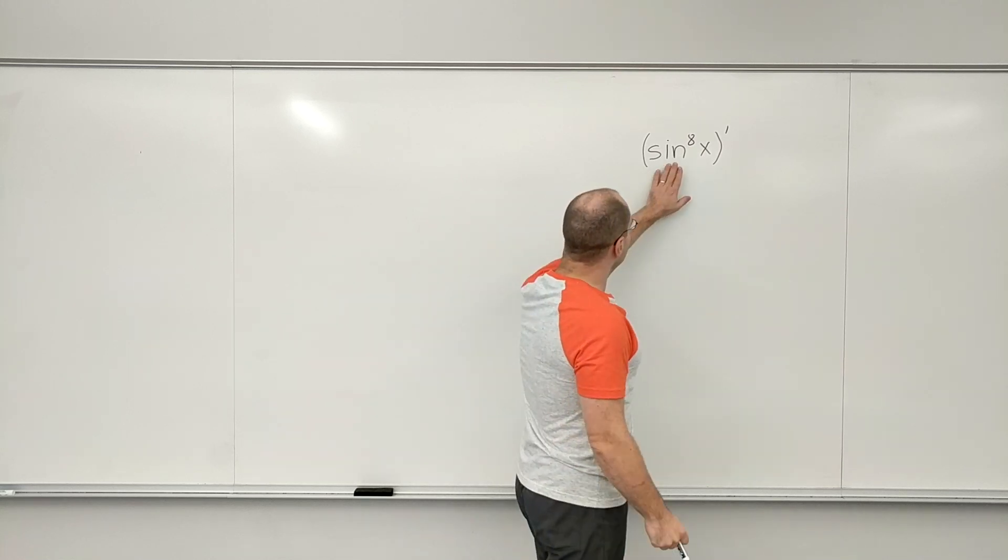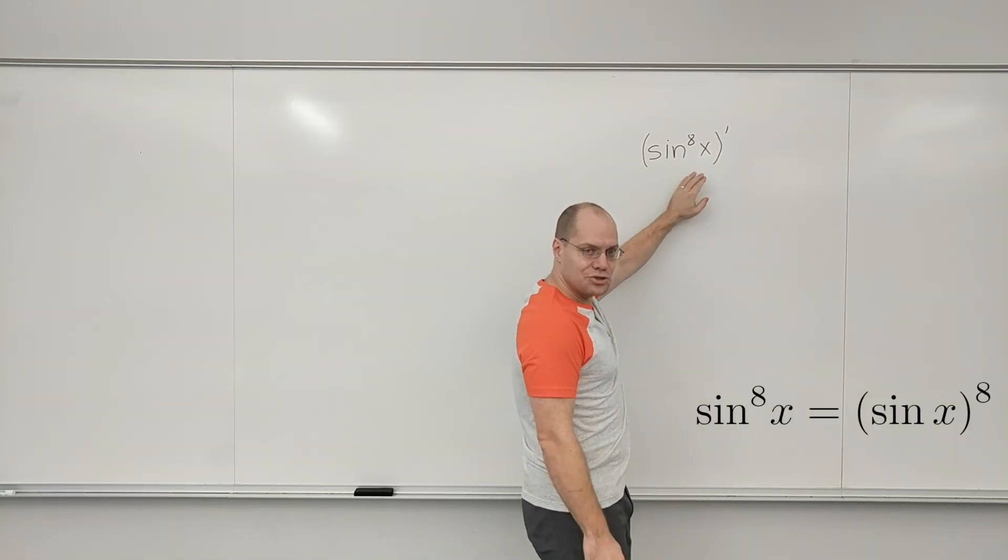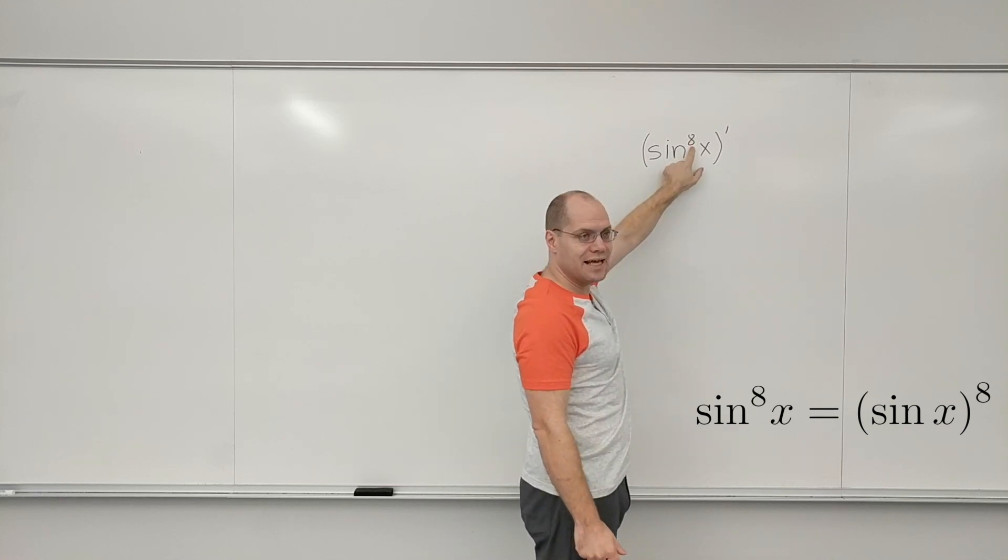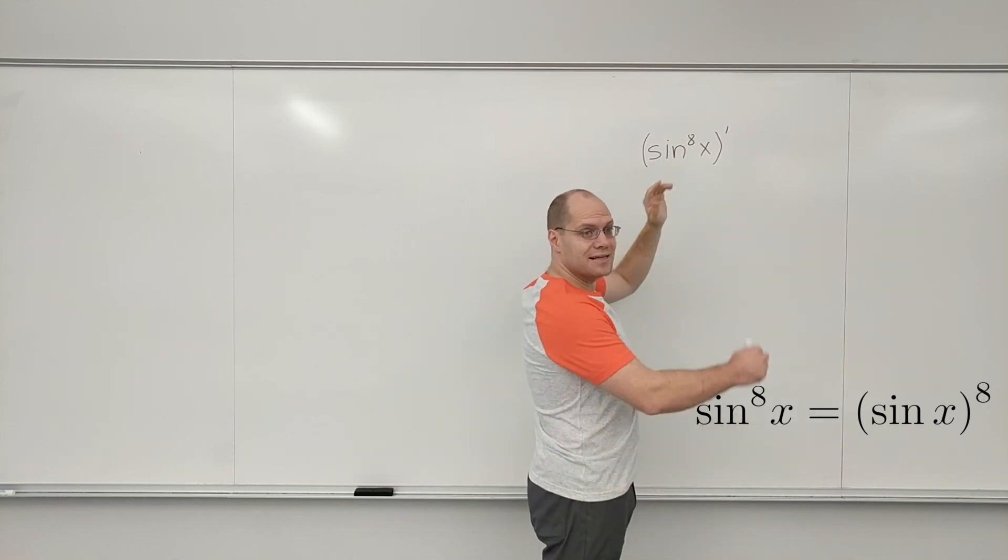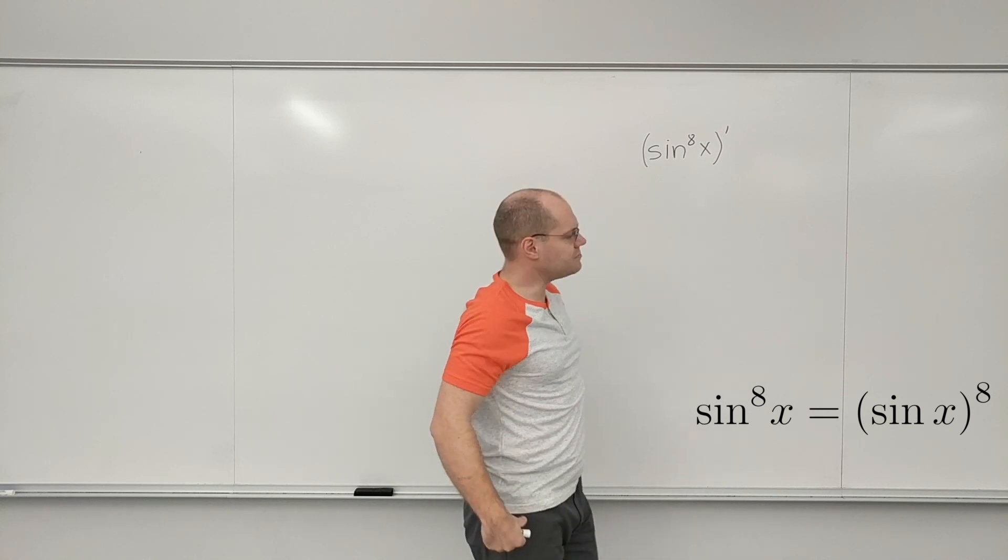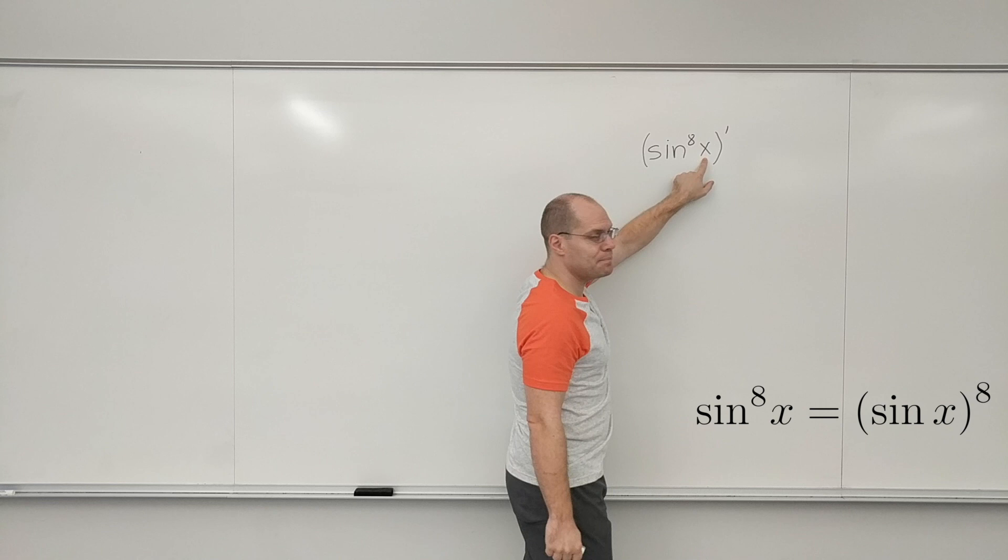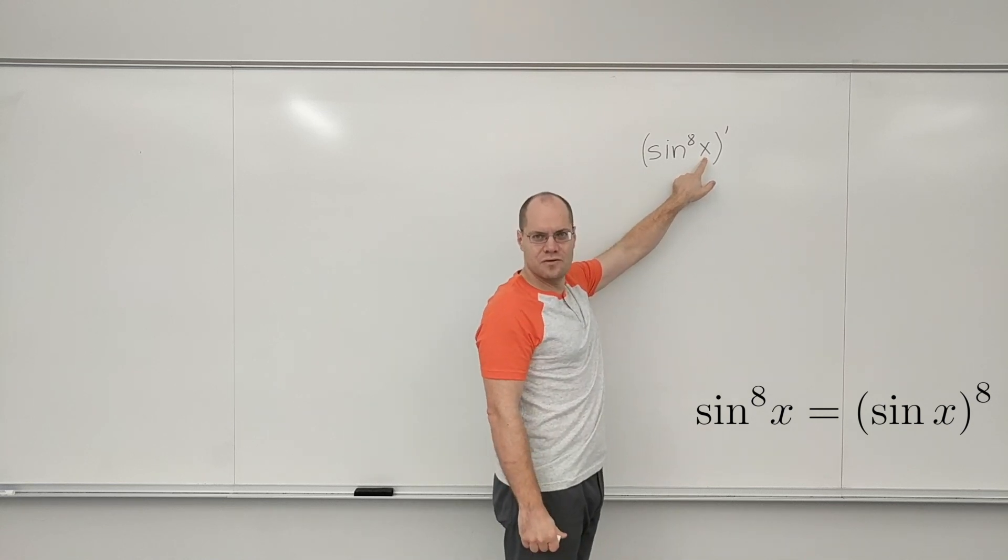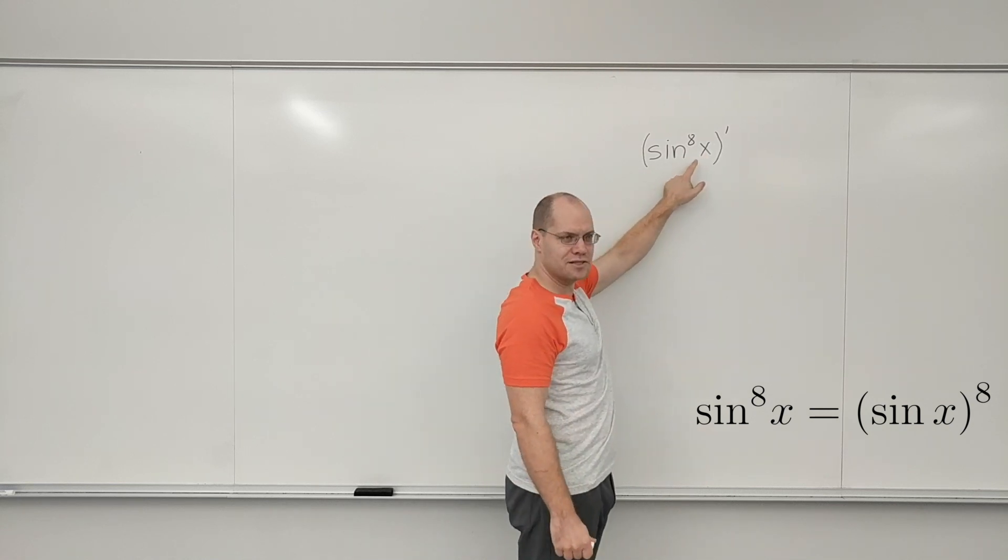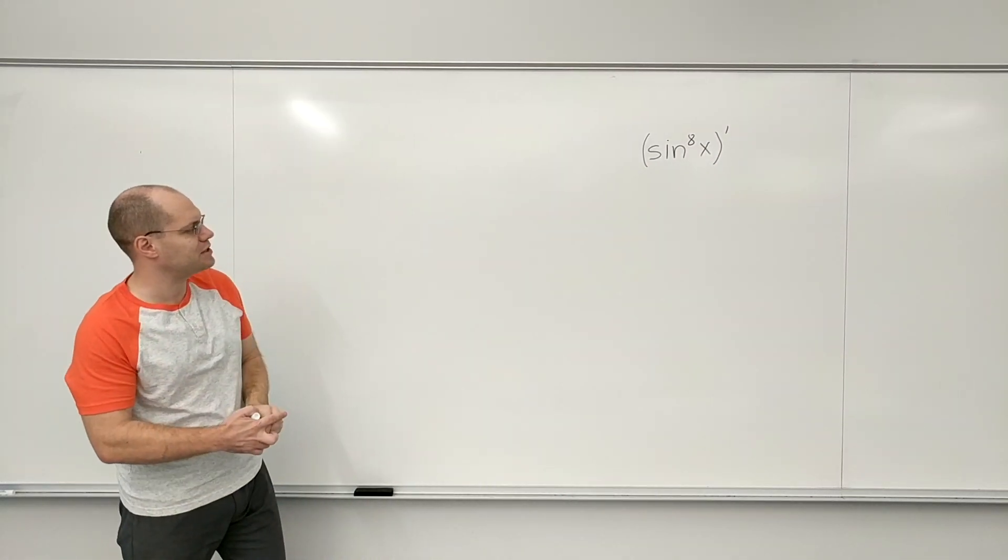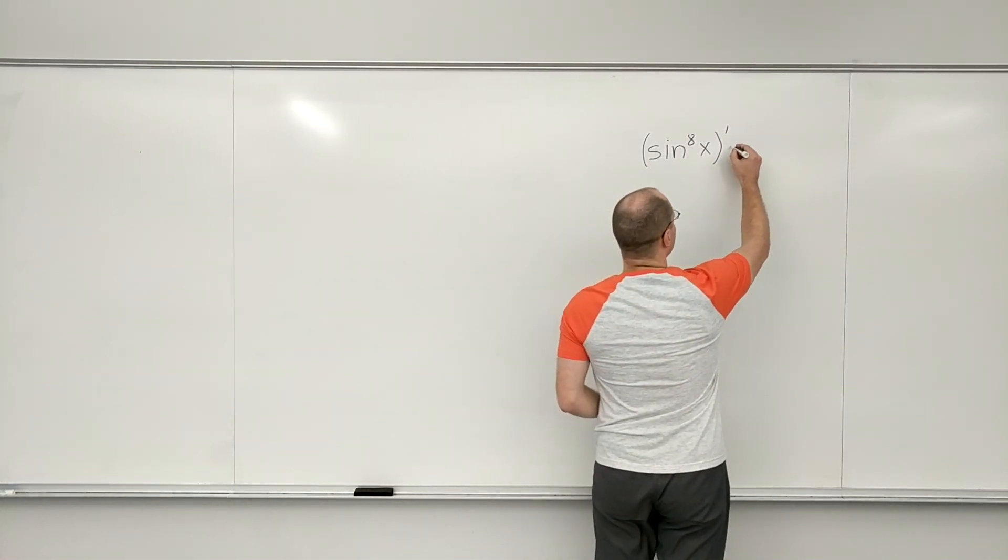Just remind yourself that this really means sine of x to the eighth power. It's a nice tradition that we put the 8 on the sine and skip the parentheses, but sometimes it can lead to confusion because it looks like the 8 happens before the x. But no, sine happens first and then you take the eighth power of sine of x. So that's what happens. I should have left more space, but that's okay.